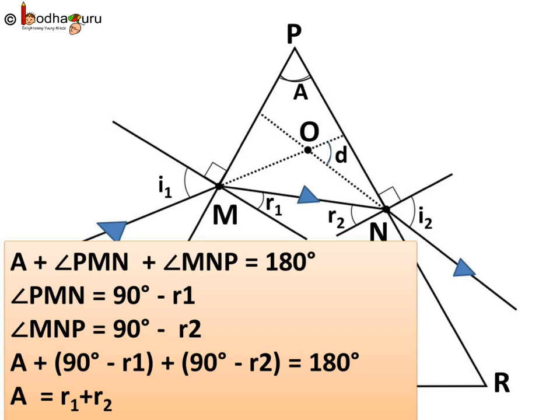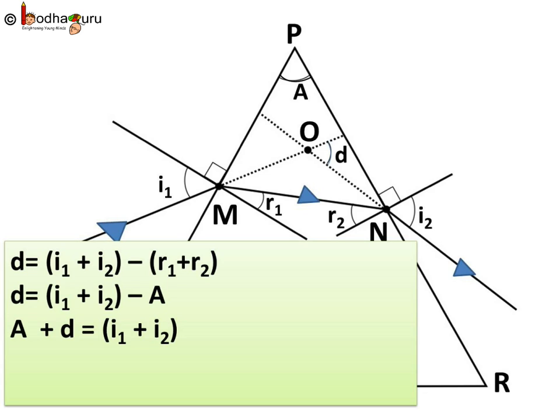180 gets cancelled from both the sides. So we get angle A is equal to R1 plus R2. Now as angle A is equal to R1 plus R2, putting this value, we get D is equal to I1 plus I2 minus A. Or we can say A plus D is equal to I1 plus I2.